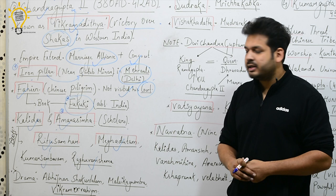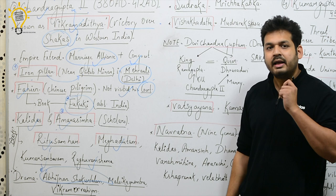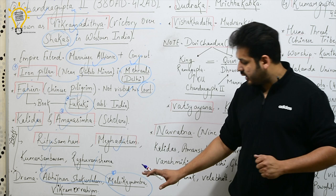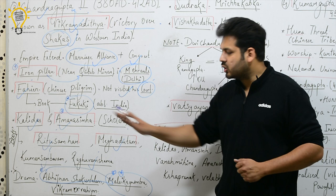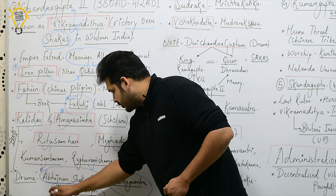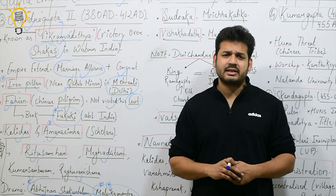Kalidas also wrote important dramas. The first is Abhijnanashakuntalam, one of his most famous works. The second is Malavikagnimitra, which has already appeared in UPSC exams — it is a love story. The third is Vikramorvashiya, also a very important drama written by Kalidas. For static exams, you can be directly asked who wrote these dramas or books.